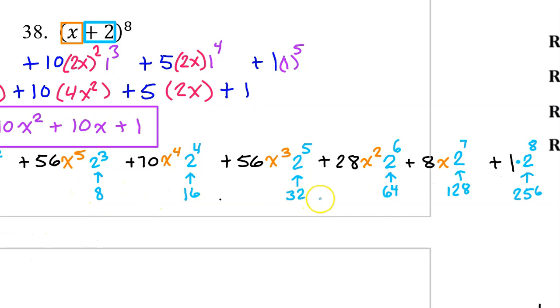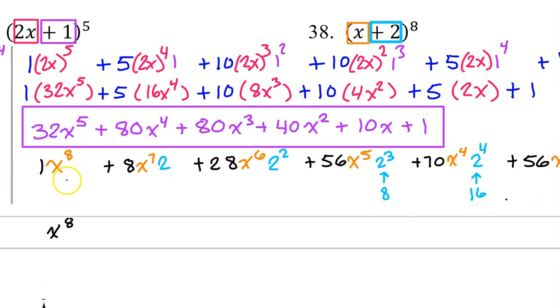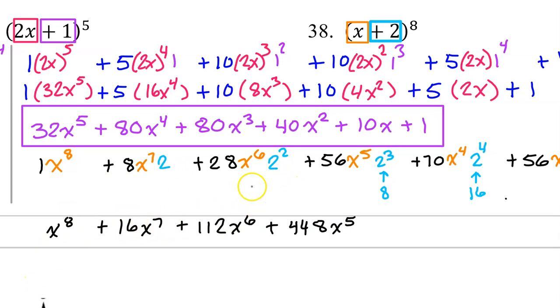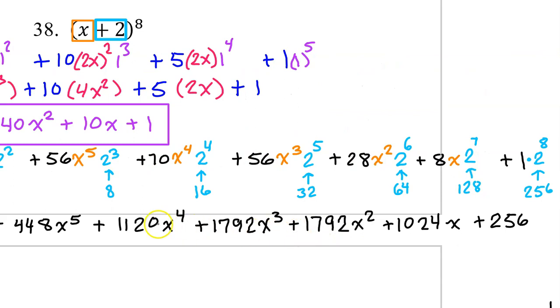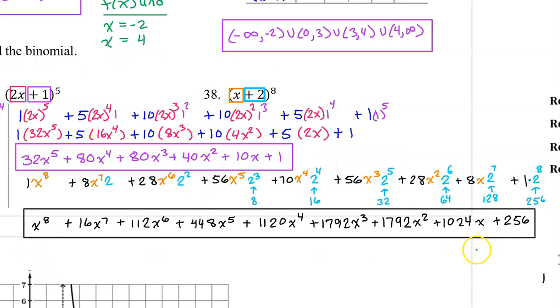Next, we would work out all of these powers of 2, like this. Now we can start writing down the final answer. So x to the eighth power, 2 times 8 is 16, so we have 16, x to the seventh power. 4 times 28 is 112, so we have 112 x to the sixth power. 8 times 56 is 448, so that's 448 x to the fifth power. Similarly, you get the rest of the terms by multiplying 70 x 16, 56 x 32, 28 x 64, 8 x 128, and there's your 256. So here's your answer to number 38.